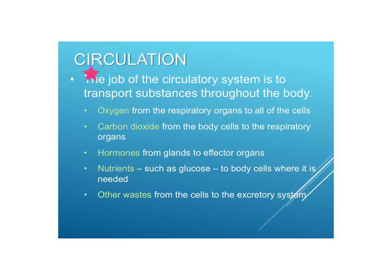The circulatory system's job is to transport substances throughout the body — not just oxygen and carbon dioxide. It transports oxygen from the lungs or gills to all the cells, CO2 from the cells to the respiratory organs, hormones from glands to their effector organs, nutrients such as glucose to the body cells, and waste products from the cells to the excretory system, such as urea or ammonia.